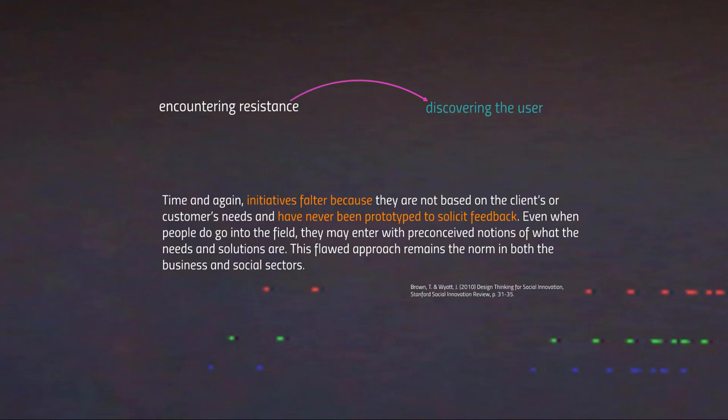This is fundamental. As Brown and Wyatt note in 'Design Thinking for Social Innovation': projects usually falter because they are never prototyped and never framed to generate feedback — in fact, they are always framed to stay away from feedback. The full quote: 'Time and again, initiatives falter because they are not based on clients' or customers' needs and have never been prototyped to solicit feedback. Even when people do go into the field, they may enter with preconceived notions of what the needs and solutions are. This flawed approach remains the norm in both the business and social sectors.'